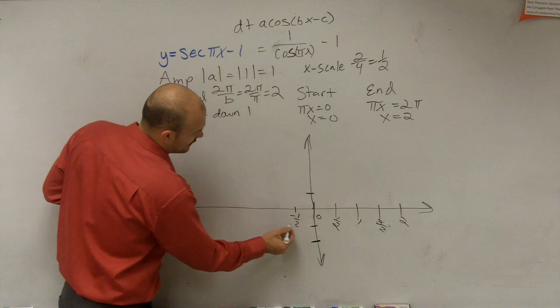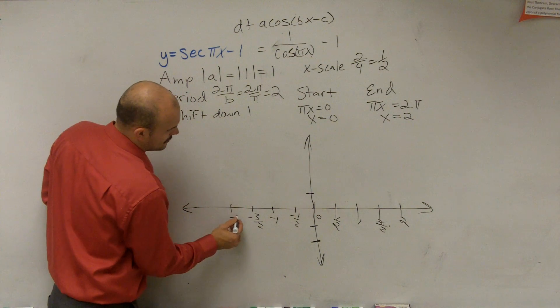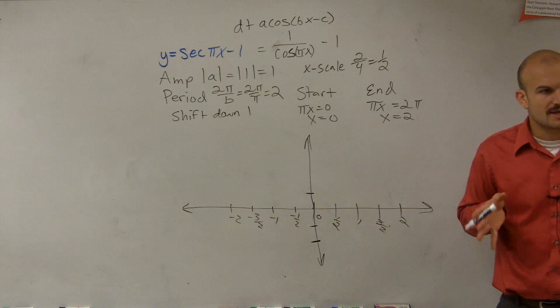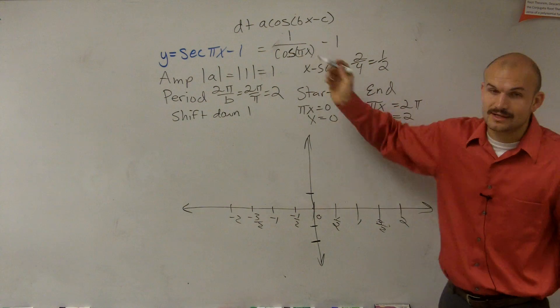We can also do this in the negative direction. So you'd have negative 1 half, negative 1, negative 3 halves, and negative 2. So it's very important that you guys be able to set up your x-scale, depending on your period.